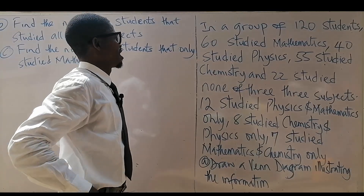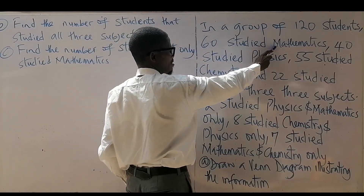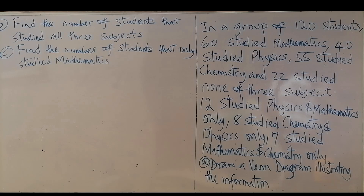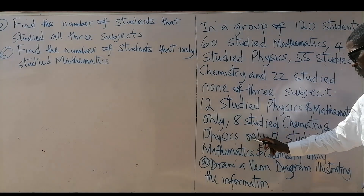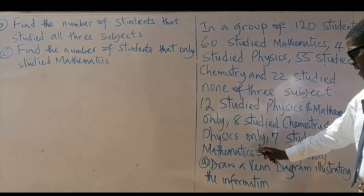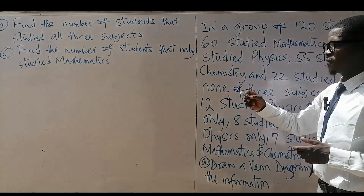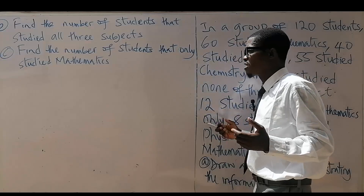We have this question: in a group of 120 students, 60 study mathematics, 40 studied physics and 55 studied chemistry. 22 studied none of the three subjects. 12 studied physics and mathematics only, eight studied chemistry and physics only, seven studied mathematics and chemistry only. Draw a Venn diagram illustrating the information. For part B, find the number of students that studied all three subjects.